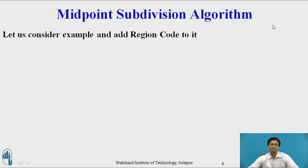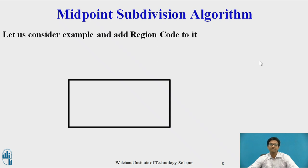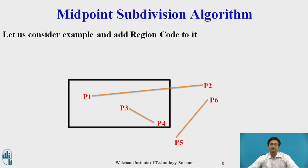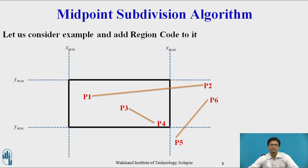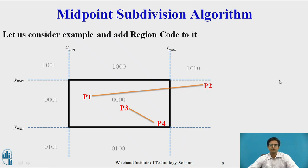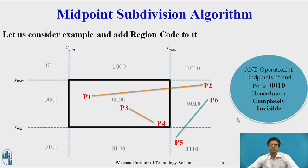Let us consider the example and apply region codes. This is the window with line segments P1P2, P3P4, P5P6. We divide the window into 9 regions and assign region codes so that every endpoint gets a region code. Consider line P5P6: P6 has region code 0010, P5 has region code 0110. The AND operation of these two endpoints gives 0010, which is non-zero, so the line is completely invisible and we reject line segment P5P6.